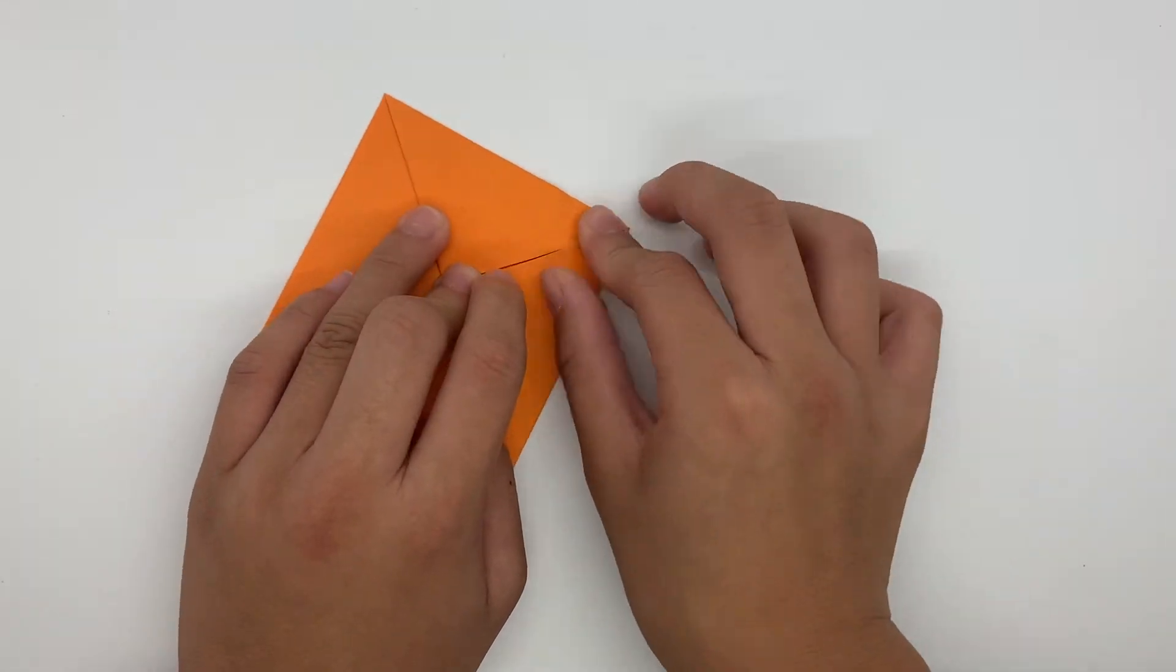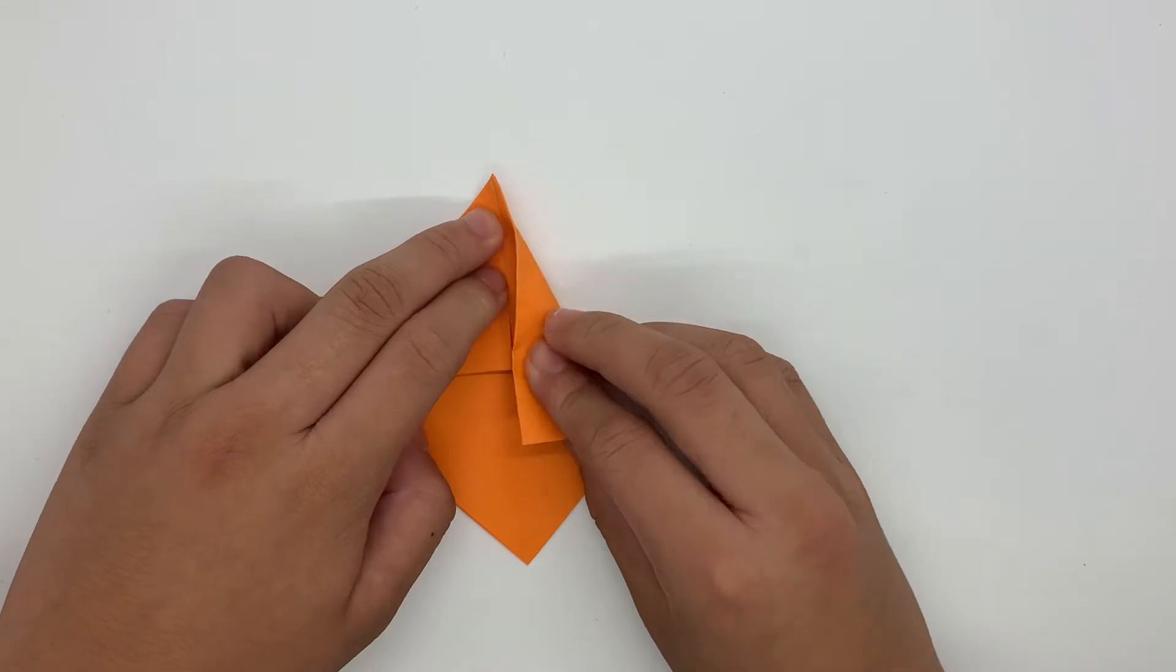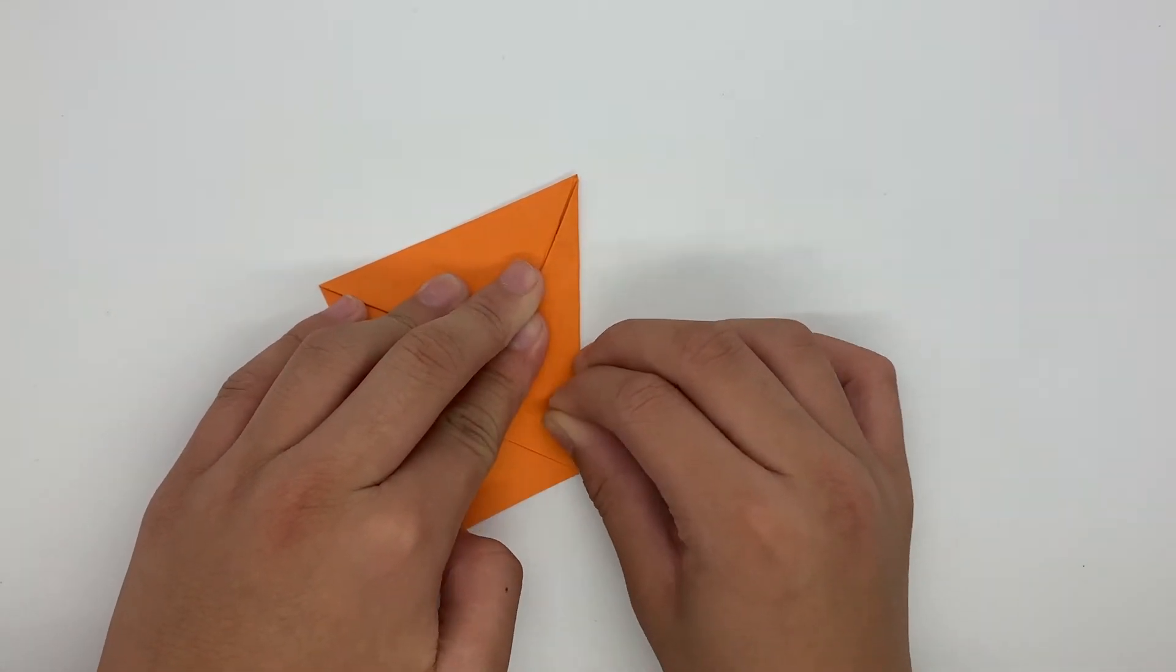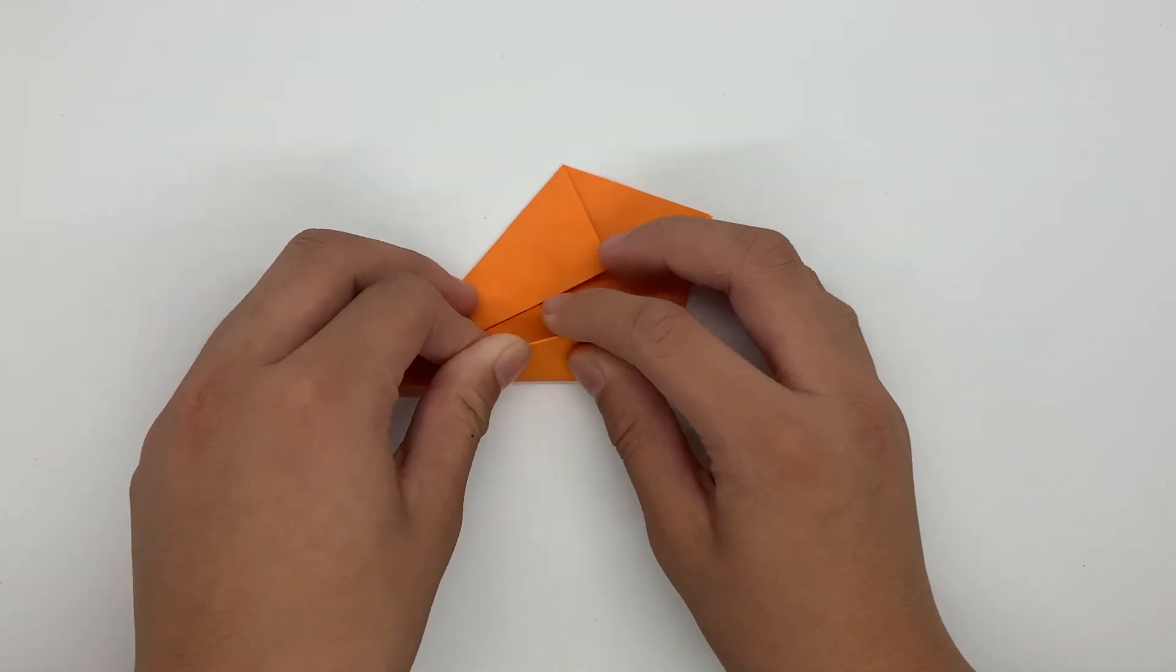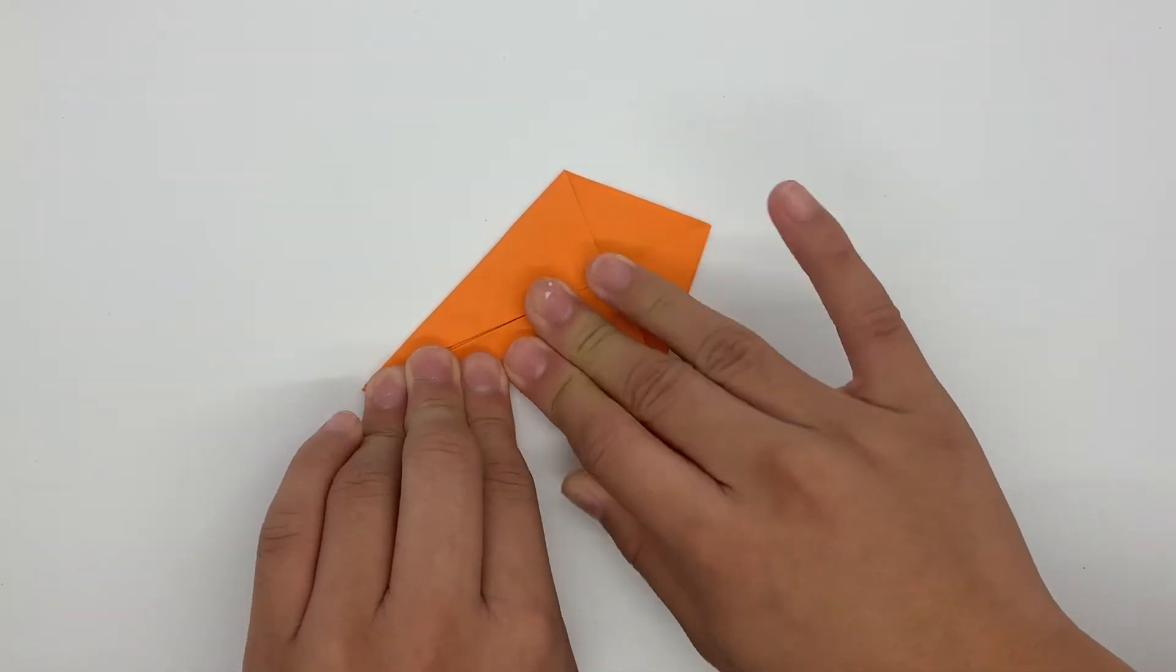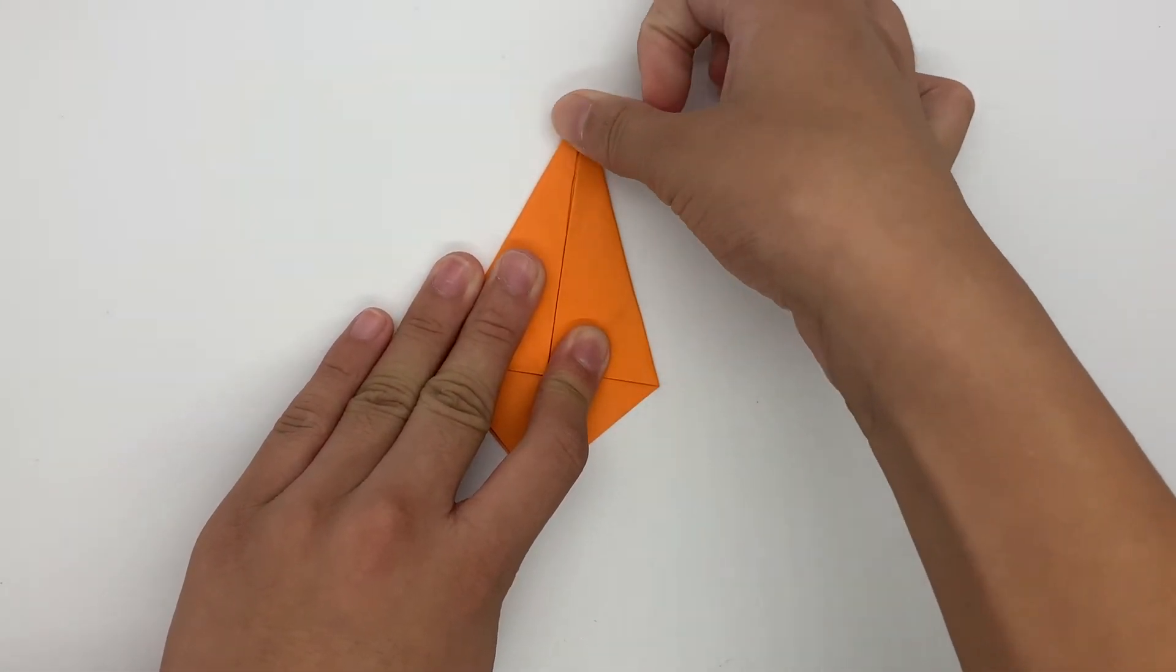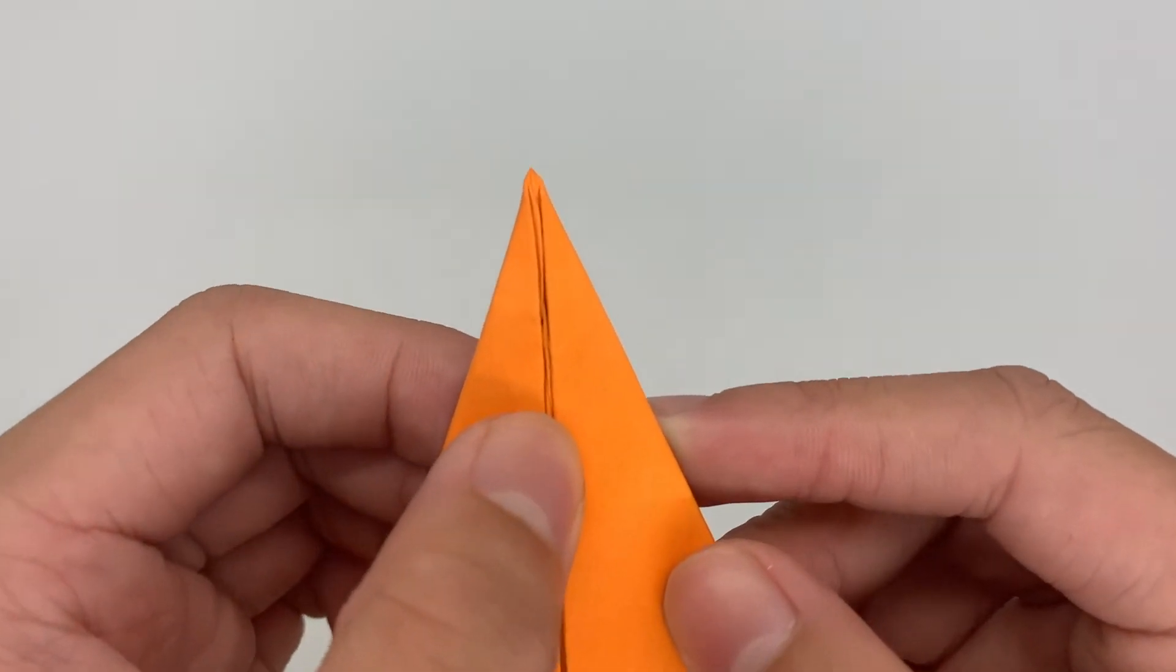And then once we have that, we're going to fold this down over here. And then we're going to fold this one down over here as well, like that. Make sure it's precise and goes right through there.